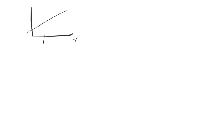Forget about the statistical aspects for a moment. Let's just talk about lines. Suppose that you have a line where some x variable is equal to either 1 or 2, and some y variable that's equal to 10 or 20. What's the slope of the line? Well, the slope is going to be the change in y's divided by the change in x's — it's going to be 10.